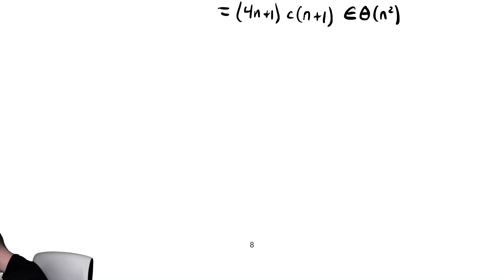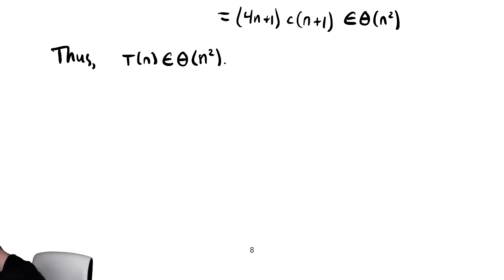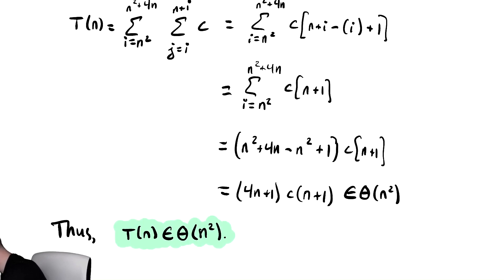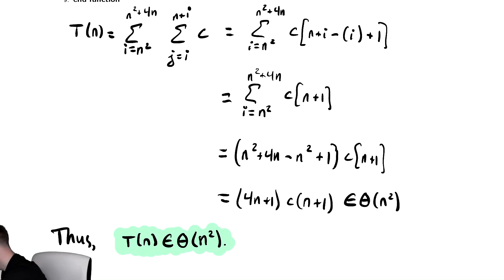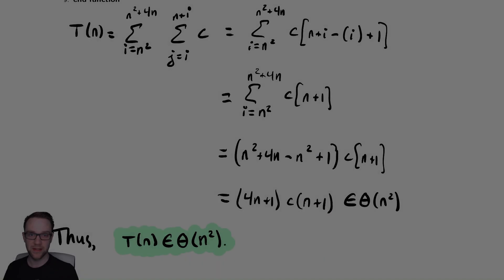Now we make our final conclusion. Thus, T(n) is in theta of n squared. Notice you need to be careful and always check if your summation variable appears inside of the summation. In this case, it always canceled out for us as we were going through the problem, so we did not need to worry about it. Thank you.